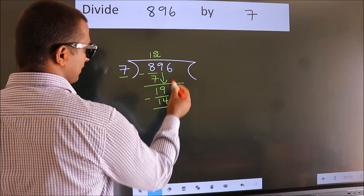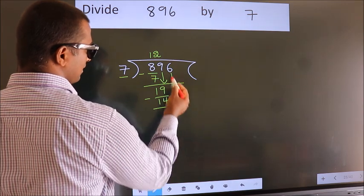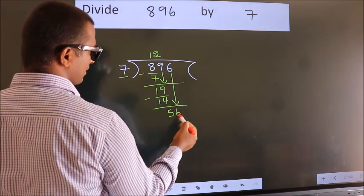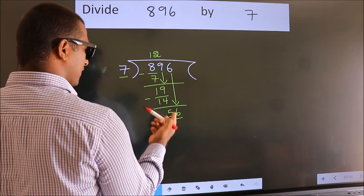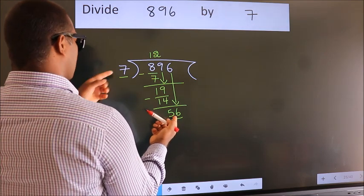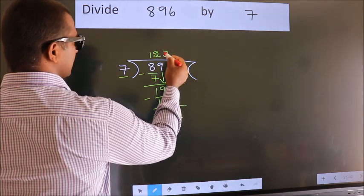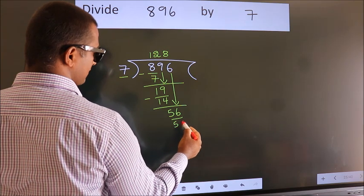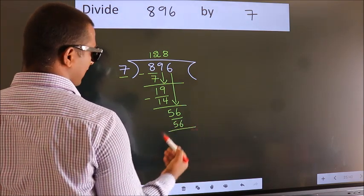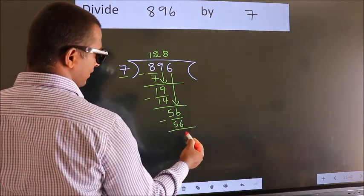After this, bring down the next number. So 6 down, making 56. When do we get 56 in the 7 table? 7 times 8 equals 56. Now we subtract and get 0.